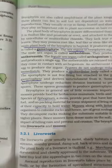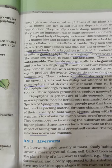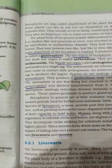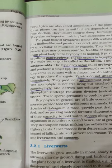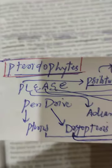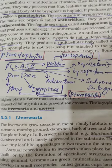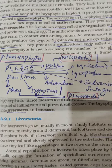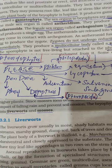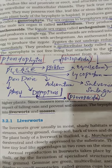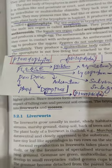Next are the examples of pteridophytes. The examples of pteridophytes are Psilotum, Lycopodium, Equisetum, Adiantum, Salvinia, Selaginella, Dryopteris and Pteris. These can be remembered by the trick 'Please Pen Drive': P relates to Psilotum, E to Equisetum, A to Adiantum, P to Pteris, Dry to Dryopteris, and S to Salvinia and Selaginella.